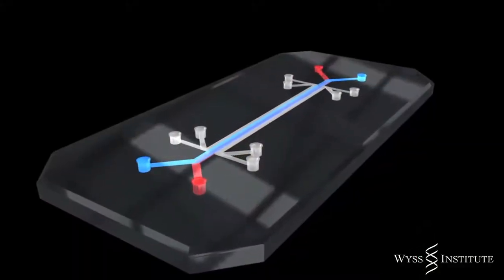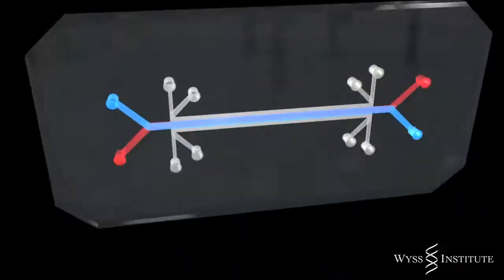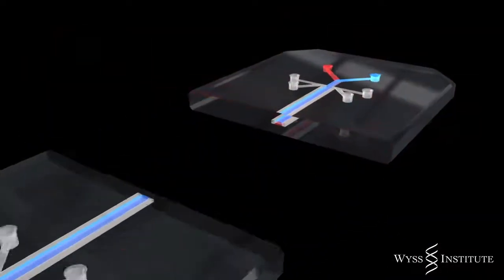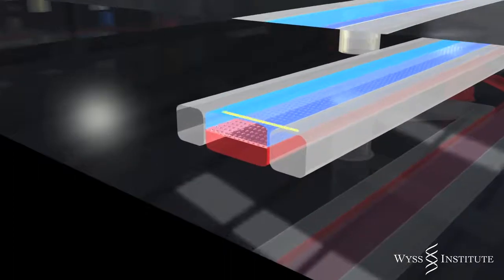The lung on a chip is crystal clear, flexible and about the size of a small computer memory stick. But it contains tiny hollow channels created using microchip fabrication techniques.